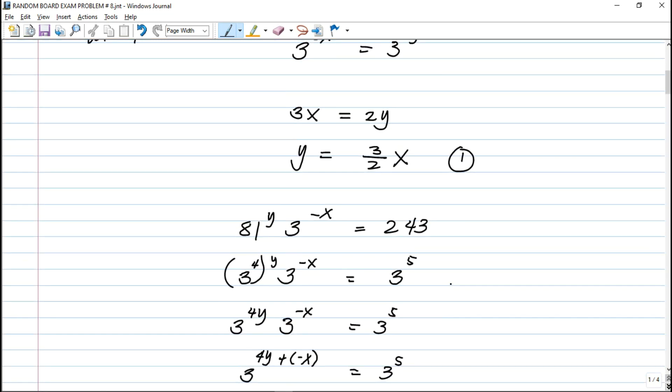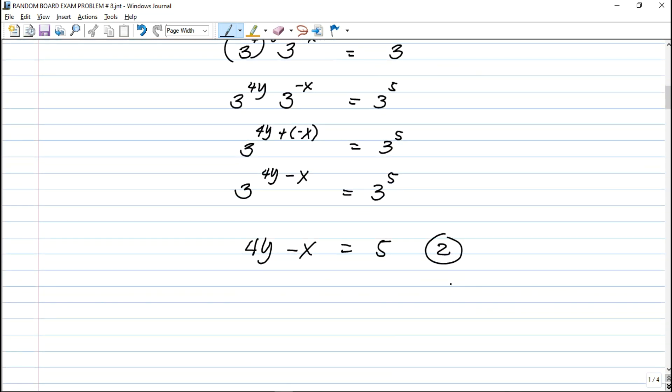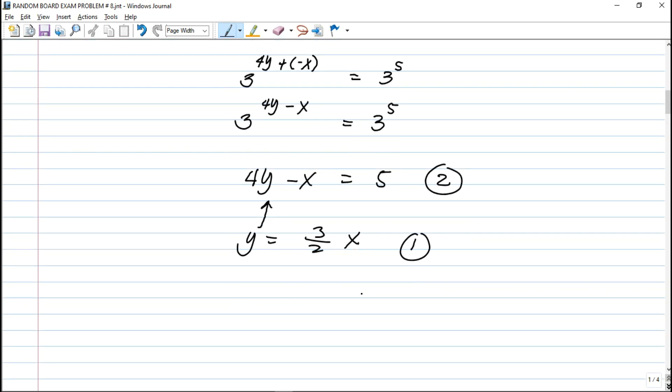Going back to equation number 1, y is equal to 3 halves x. This two equations two unknown, we can actually find x by substituting y to this second equation. I-substitute natin yung y in terms of x. So that is 4 times the quantity 3 halves x minus x equals 5.